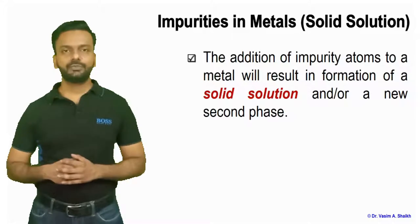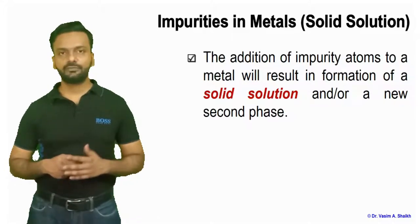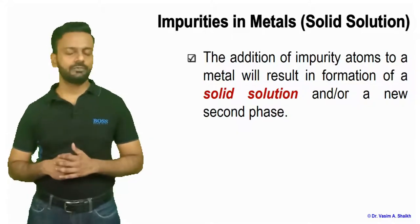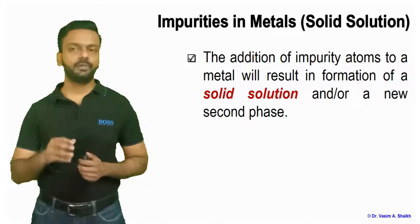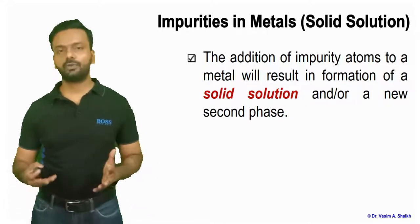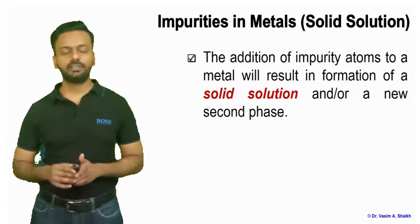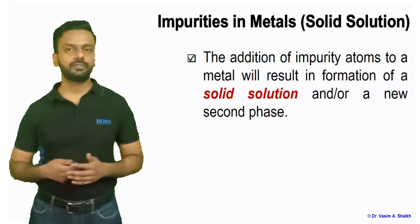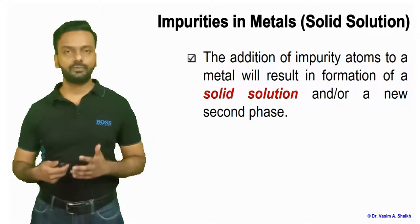The addition of impurity atoms to metals results in either the formation of a solid solution or a new second phase. When impurity atoms are added, there are certain rules that must be followed. If these rules are broken, we get a new phase rather than a solid solution.